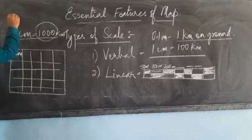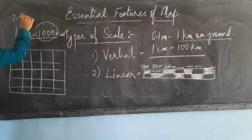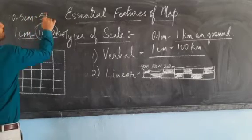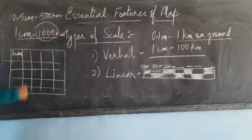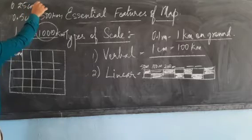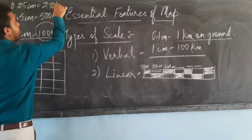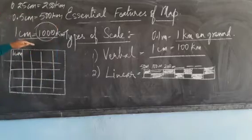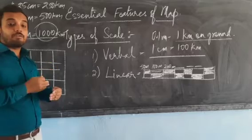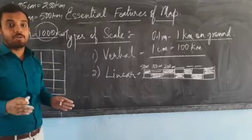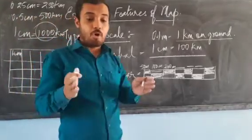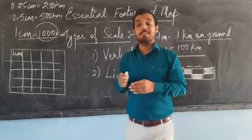One centimeter equals one thousand kilometers. Half of one centimeter is 0.5 centimeters, which means 500 kilometers. And 0.25 centimeters will stand for 250 kilometers. Now with the help of this scale, we can easily measure the distance between places shown on the map, and a large area can be easily fitted on a piece of chart paper.